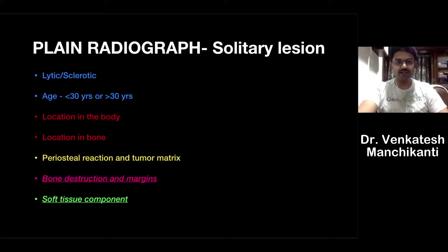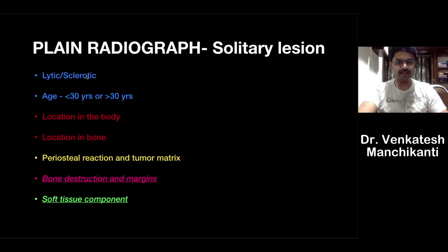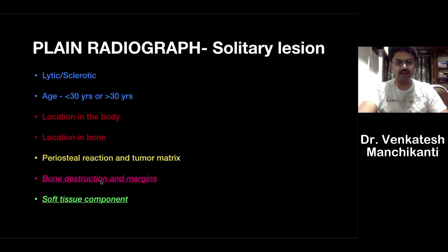On a plain radiograph, once you encounter a solitary lesion, you need to carefully assess before jumping to a conclusion — whether it is a solitary bone cyst or aneurysmal bone cyst. History, age, and why the patient presented at this point all matter. On plain radiograph, first look whether the lesion is lytic or sclerotic, then assess age, location in the body, location within the bone (epiphysis, metaphysis, or diaphysis), periosteal reaction, type of tumor matrix, bone destruction, bone margins, and associated soft tissue component.